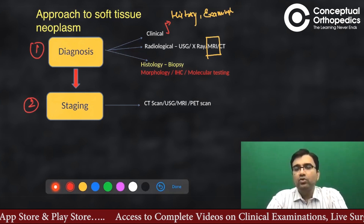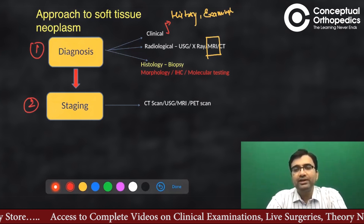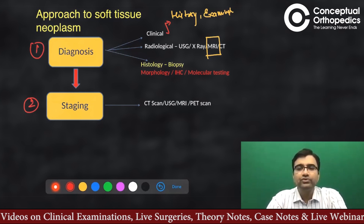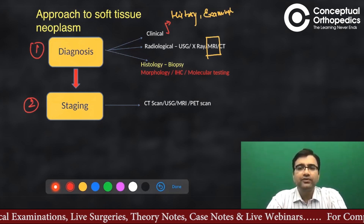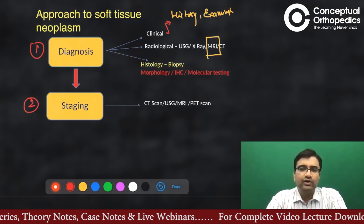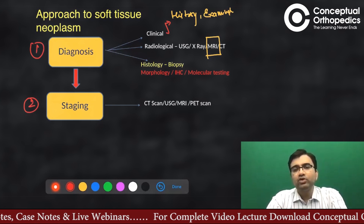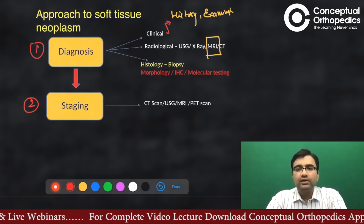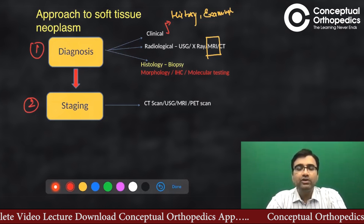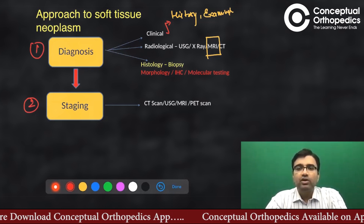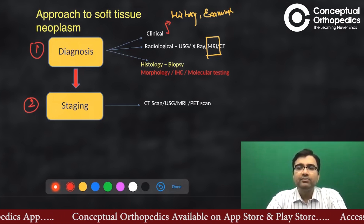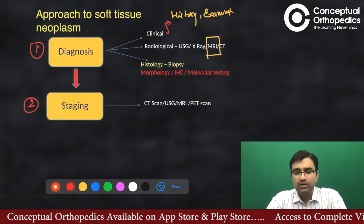Staging means knowing the exact spread of the tumor in the body. Depending on the histology, we may use a PET CT scan, which can assess bone marrow, bone, and soft tissues. In some cases, like myxoid liposarcoma, which metastasizes to the spine or vertebral column, MRI may be better. Some tumors metastasize to nodes, so ultrasonography of local nodes is used. When PET CT is not available, local nodes plus CT scan can be used, since the majority of soft tissue sarcomas metastasize to the lungs.